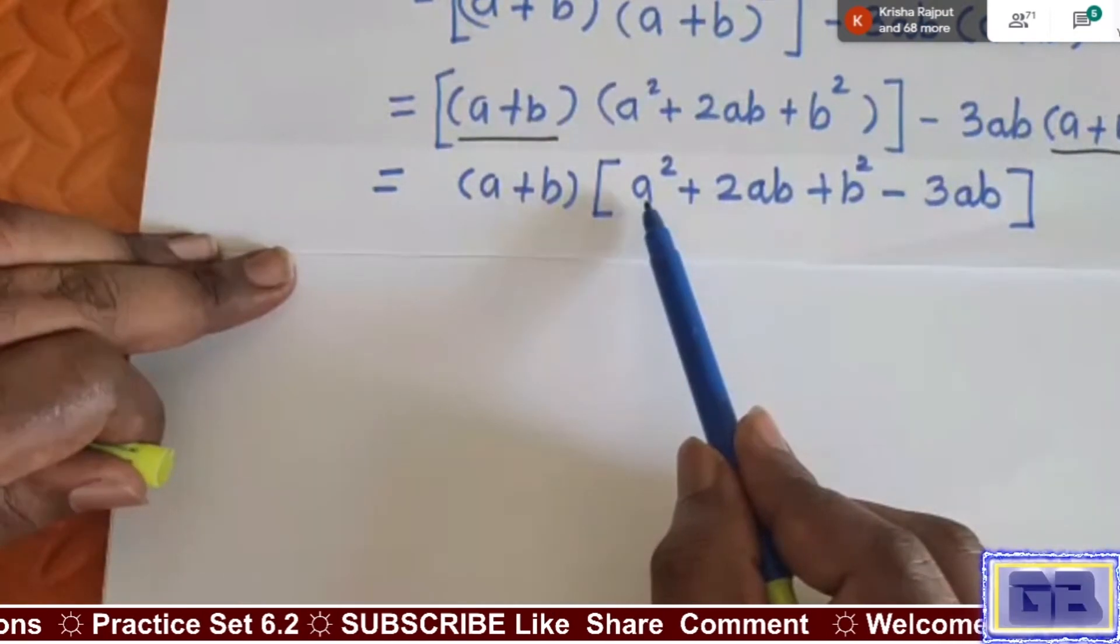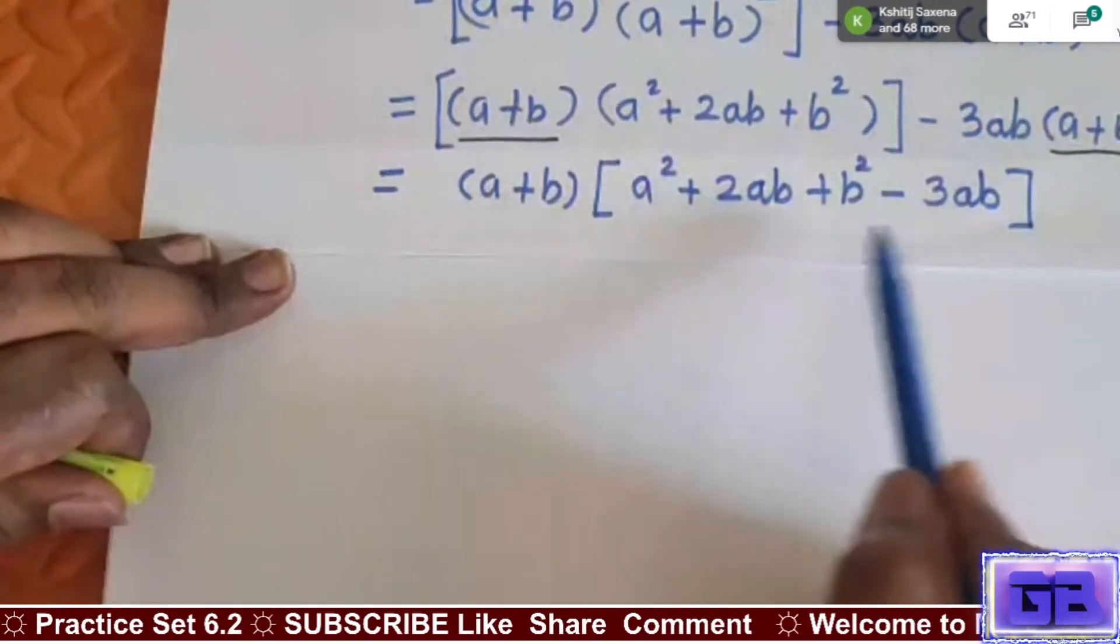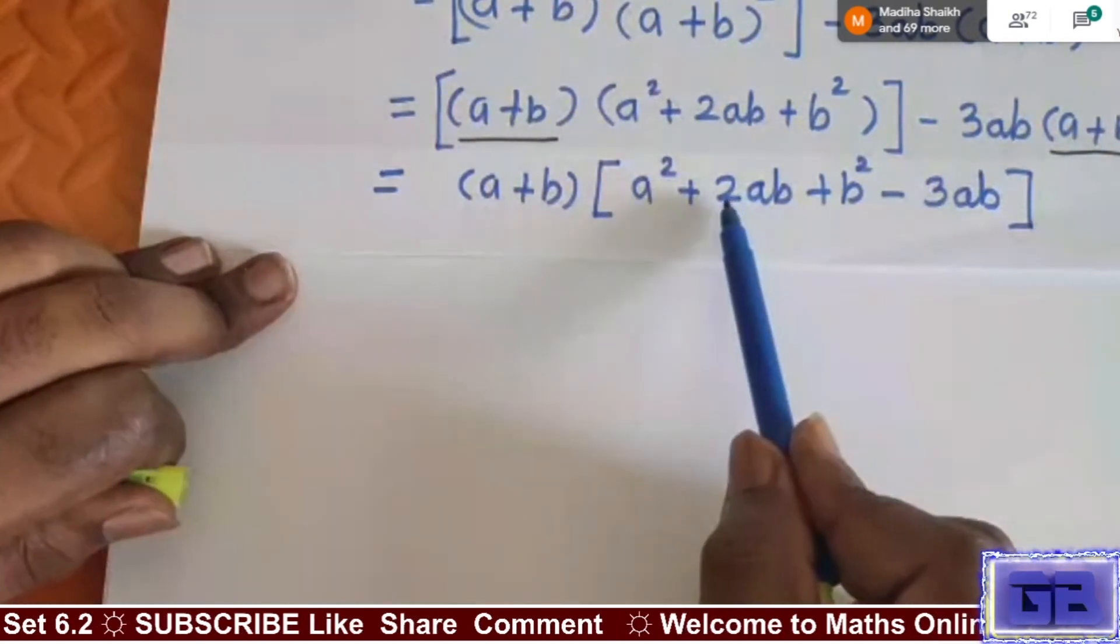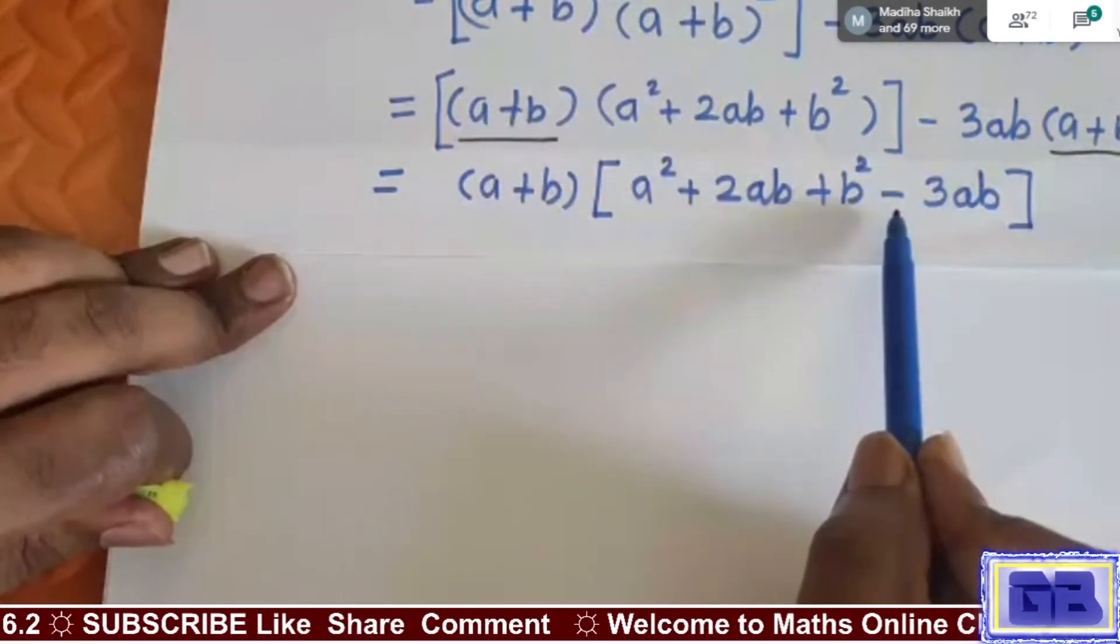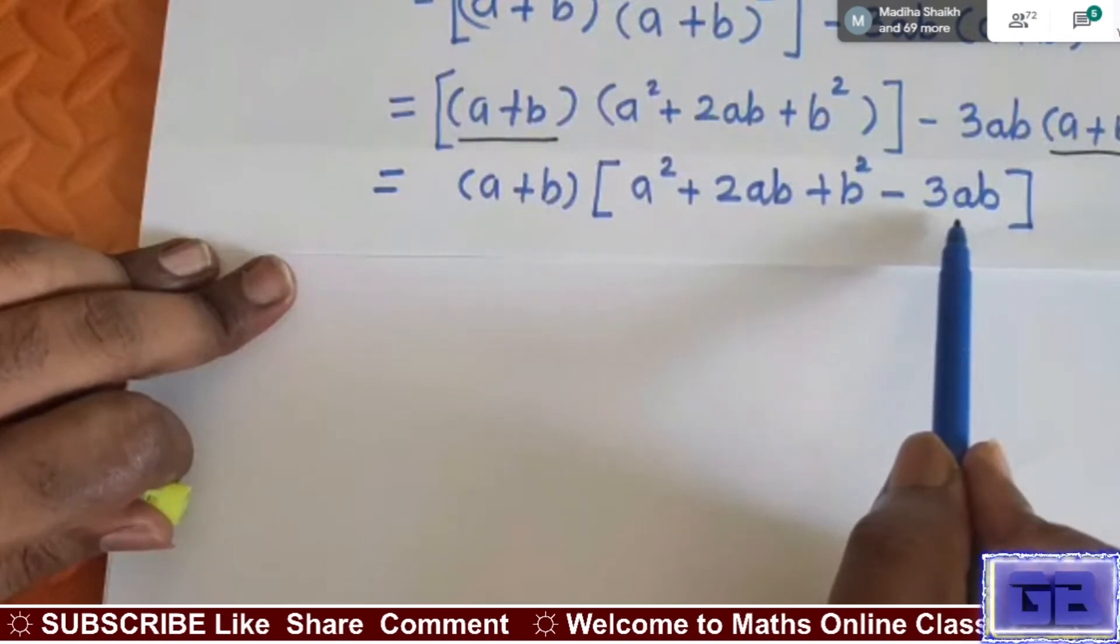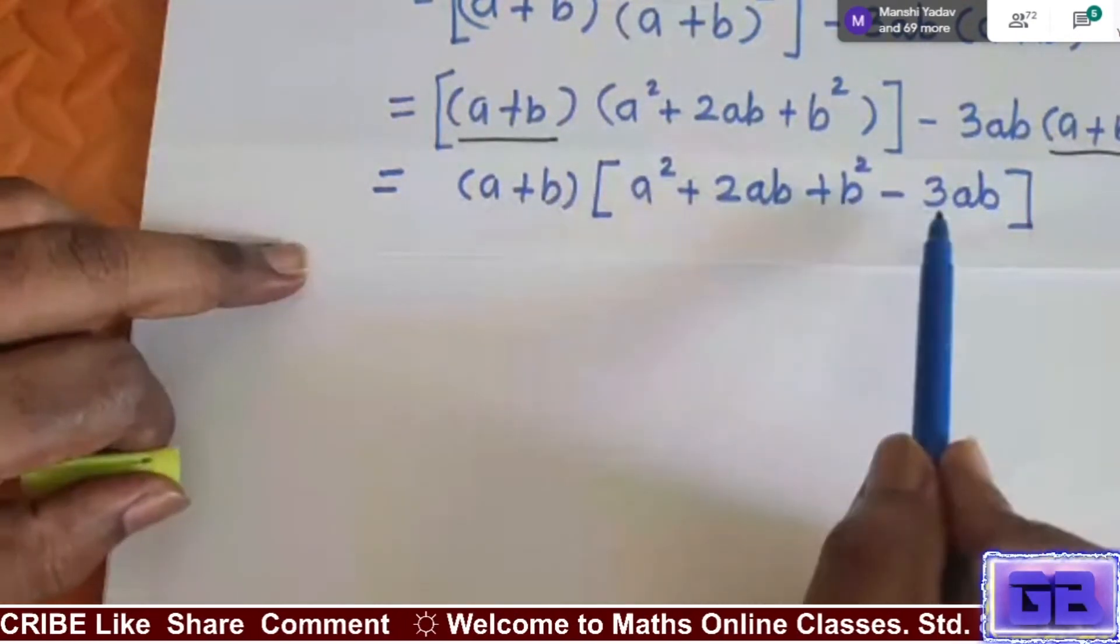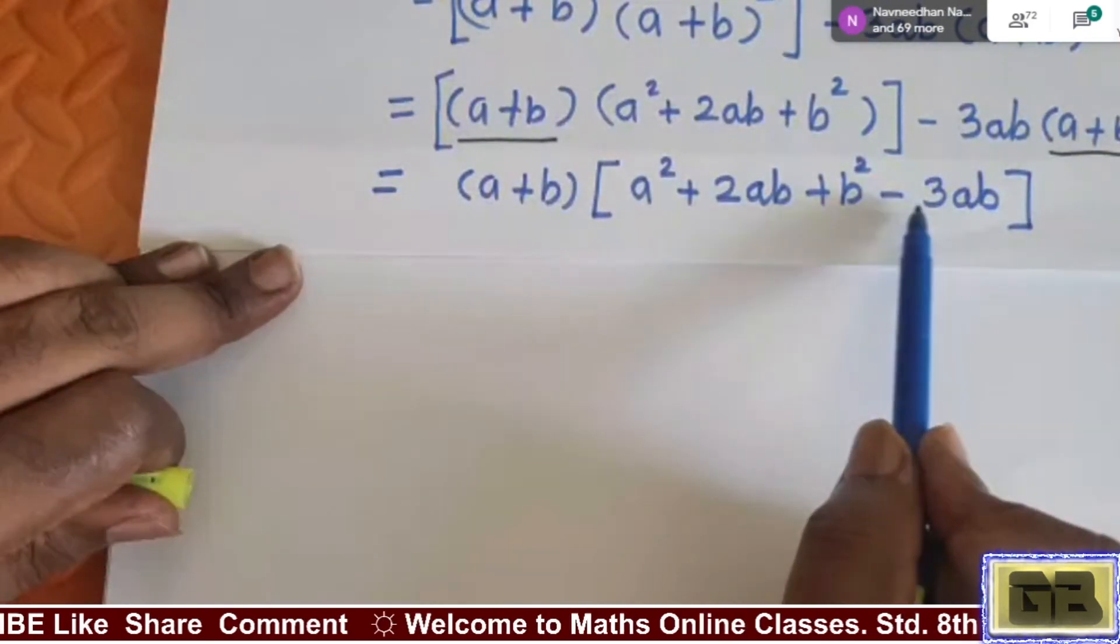If we see all the terms inside this square bracket, you will observe there are like terms. Here 2ab's there and here minus 3ab's there. These two are like terms, so we can do subtraction here.